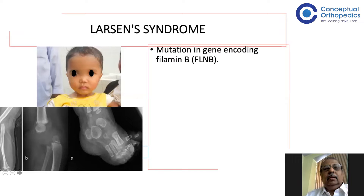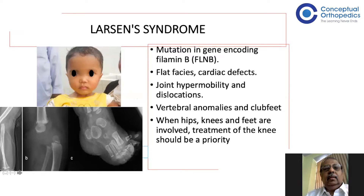This is a child with Larsen syndrome from our clinic. You can see the wide hypertelorism — increased distance between the eyes — and dislocation of the radial head, dislocation of the knee, and the characteristic finding of two epiphyses for the calcaneum (normally only one). When the hip, knee, and feet are all involved, the knee should be treated first to achieve knee flexion before managing clubfoot. The hip is usually dealt with around the age of one year.